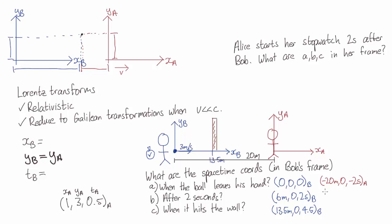After 2 seconds, the ball has traveled forward 6 meters, so it's minus 14 meters, 14 meters behind Alice. The time has advanced 2 seconds, bringing it to what Alice calls t equals 0.